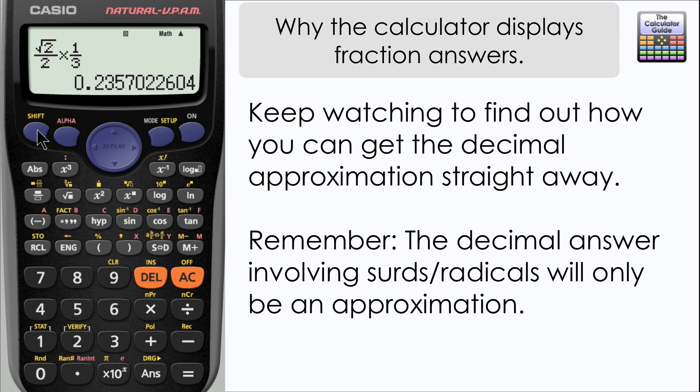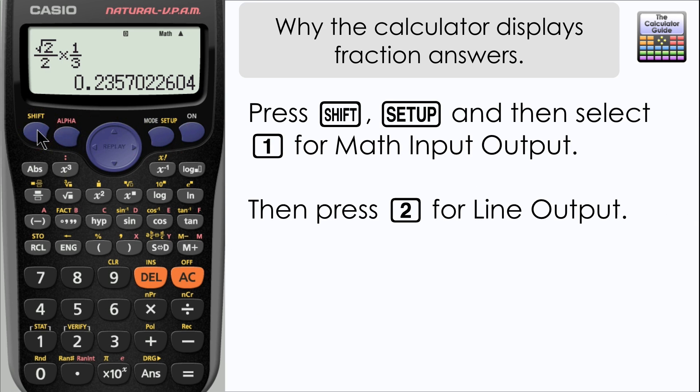Now there is a way that we can change it for calculations such as this. If you go to shift and then setup, we're going to press 1 for math input and output, and then we want 2 for the line output.